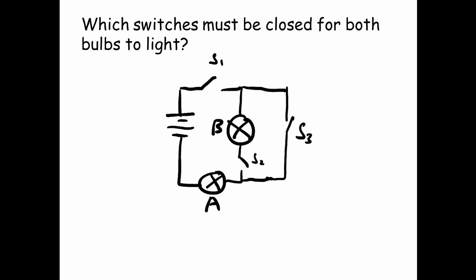Which switches must be closed for both bulbs to light? Well, for both bulbs to light you need to close S1 and S2. However, S3 must remain open, otherwise it's going to short out bulb B.